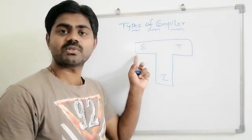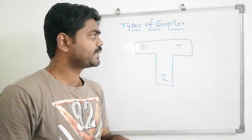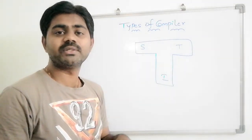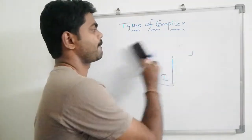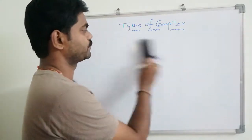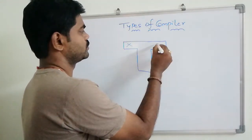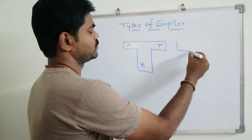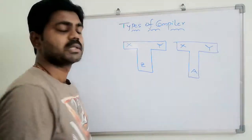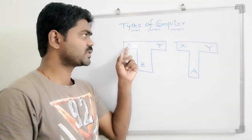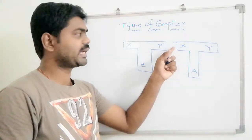Here S stands for source language, T stands for target language, and I stands for implementation language. If a cross compiler combines any two compilers, we get a new product or new result. For example, in the first compiler we have source language X, target language Y, and implementation language Z.